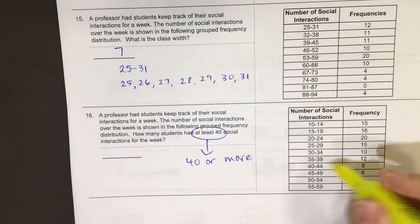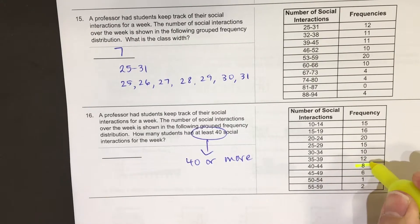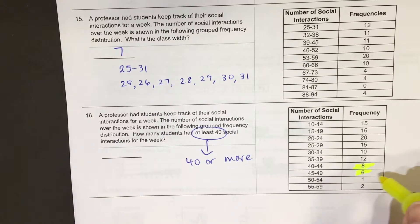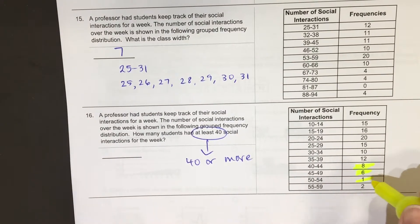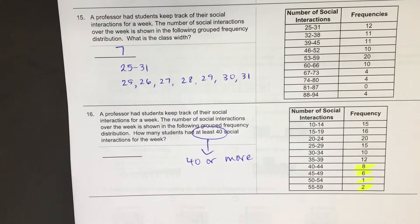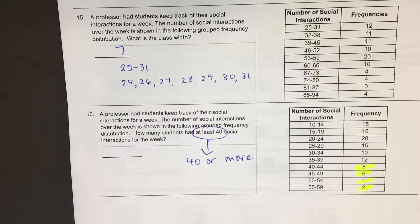I'll circle that and I'm going to write 40 or more. Well, here's 40. 8 people said 40 to 44. 6 people said 45 to 49. 1 person said 50 to 54. 2 people said 55 to 59. Add those numbers up.